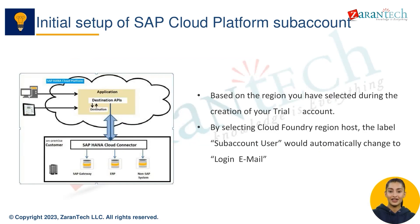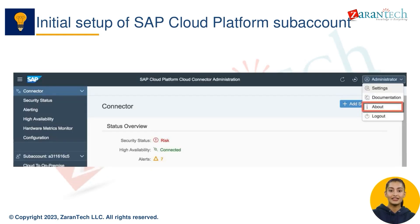The initial setup of the SAP Cloud Connector (SCC) is a necessary step in order to connect your on-premise SAP systems to the SAP Cloud Platform (SCP). The SCC provides a secure and reliable connection between your on-premise systems and the SCP, and also allows you to manage your on-premise systems from the SCP. First, download and install the SCC from the SAP website. The SCC is available for Windows, Linux, and Mac OSX.